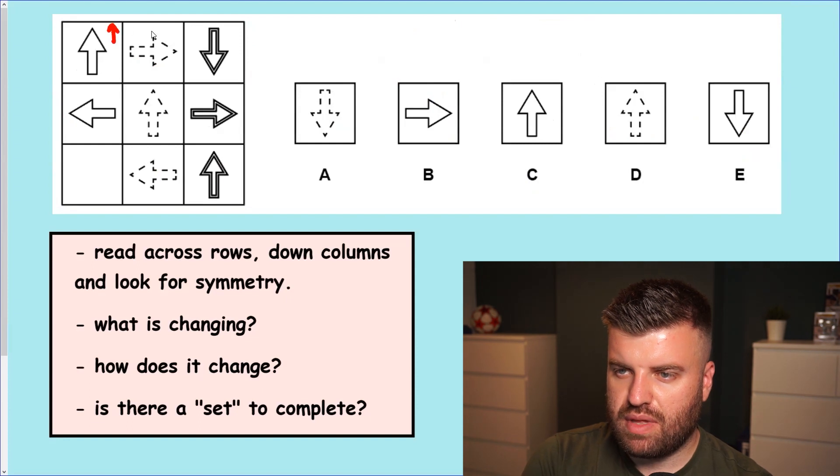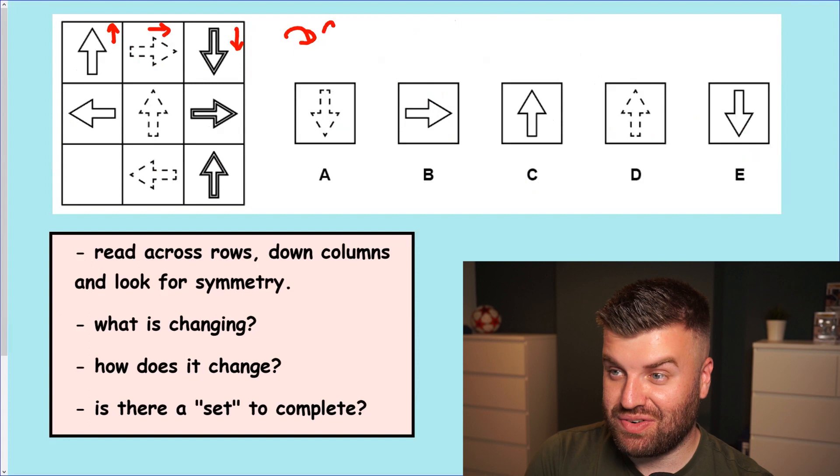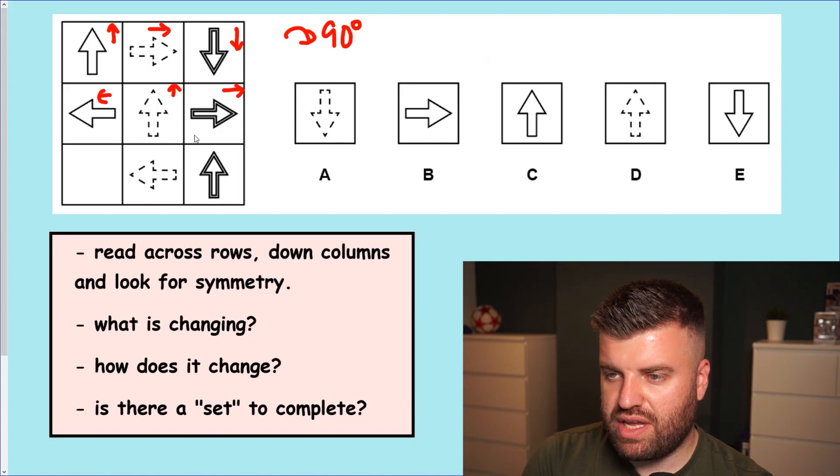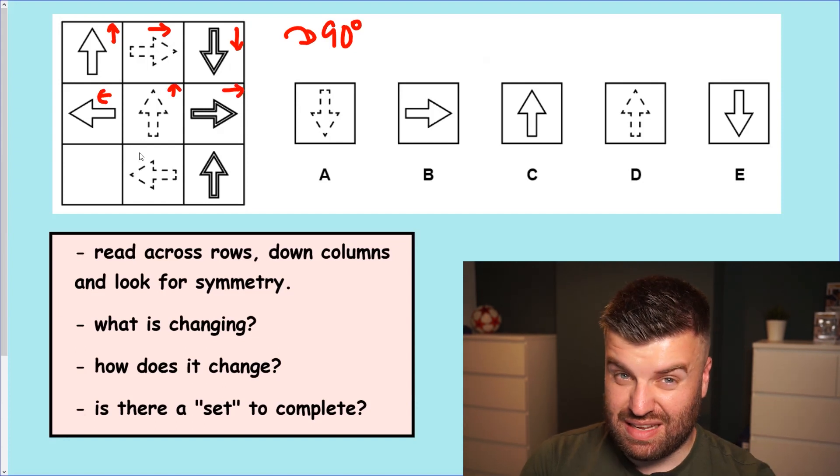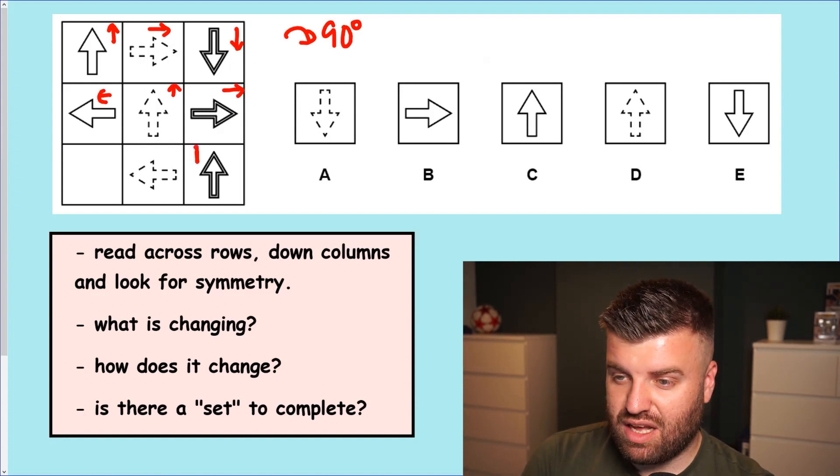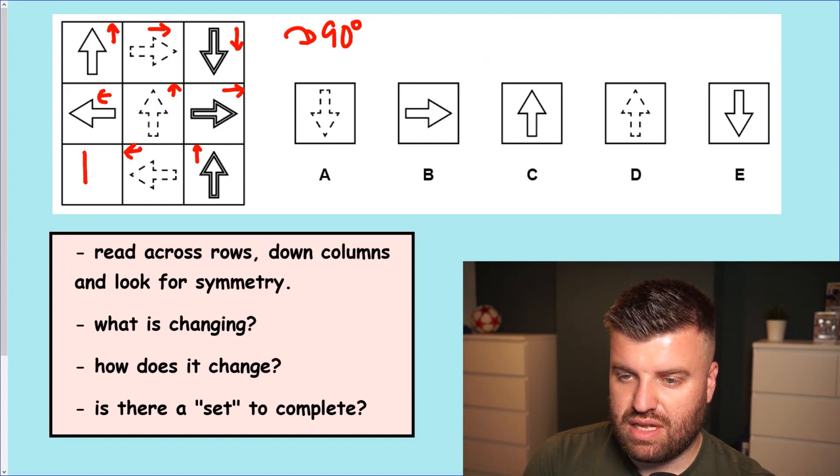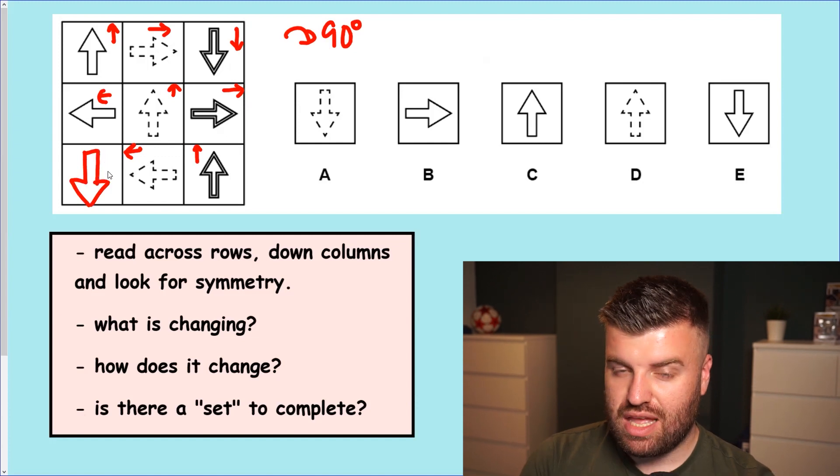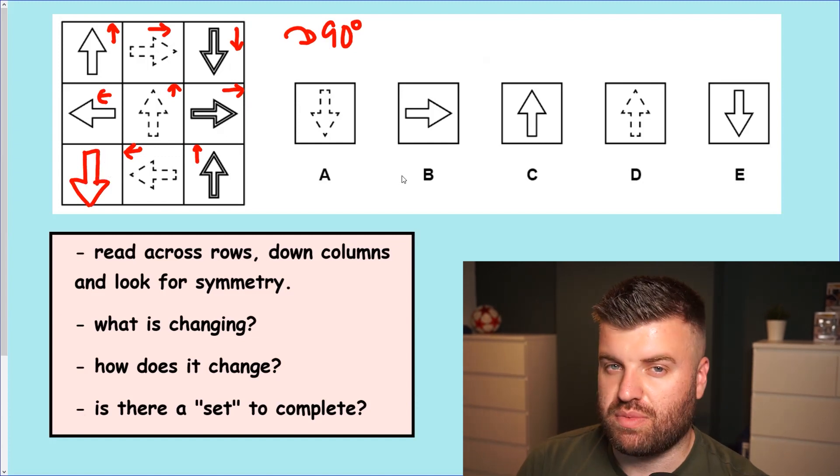So we have a transformation going on here don't we? The arrow is pointing up then it's pointing right then it's pointing down. It's rotating 90 degrees clockwise again. Same happens in the middle. It's facing left then it's up and then it's right. So here we're actually going to have to work backwards aren't we? It's facing up there, left there which means this arrow is going to have to face down. So we need an arrow pointing downwards.